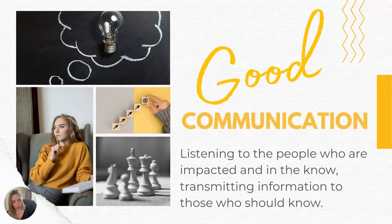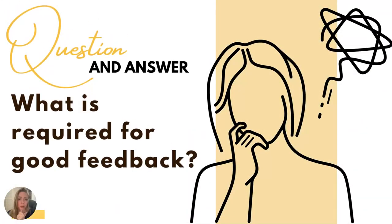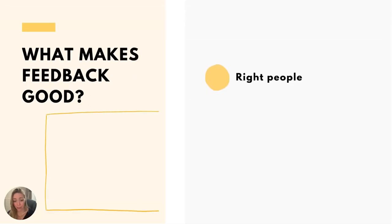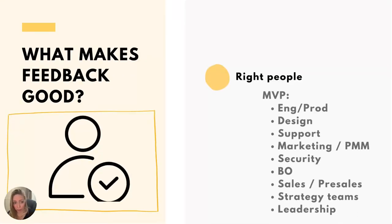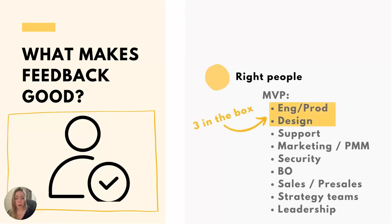Now that you know about strategy and OKRs, let's talk about communication — the final and most important part. What's required for good feedback to know your objective is ready? You need to ask the right people. Don't ask your best friend at work. Ask people who actually challenge you. In product and tech, talk to your design and engineering people — your three in the box. Talk to support, marketing, product marketing, security, back office, sales, pre-sales, strategy, leadership. If you're going to affect somebody with your objective, you better ask them if they think it's good enough.